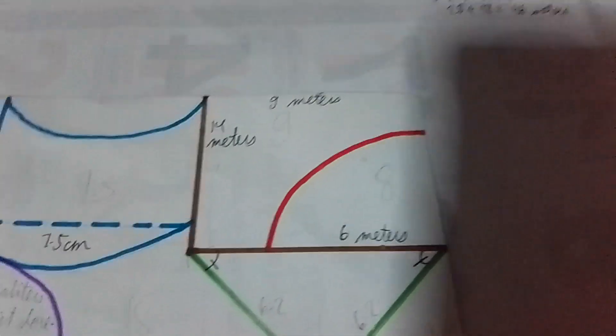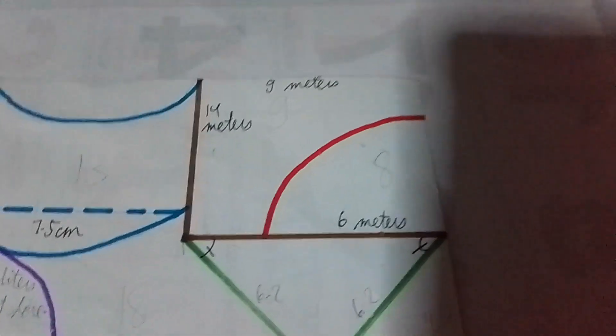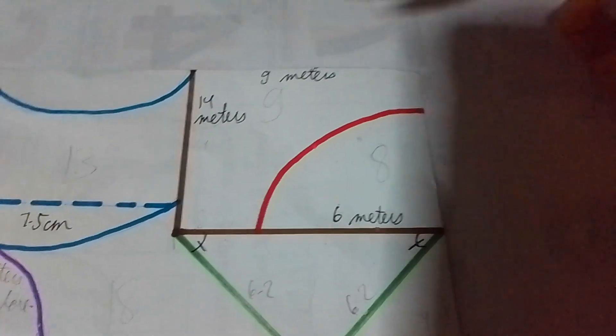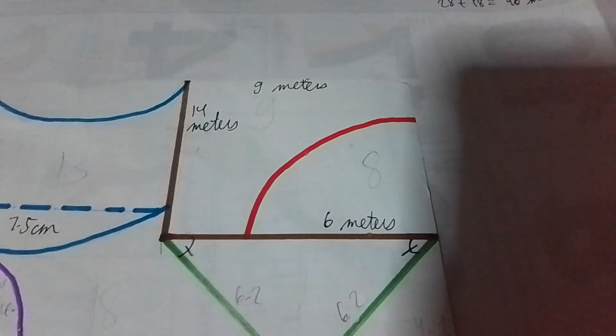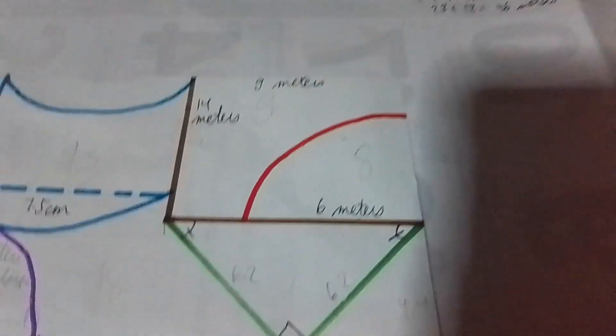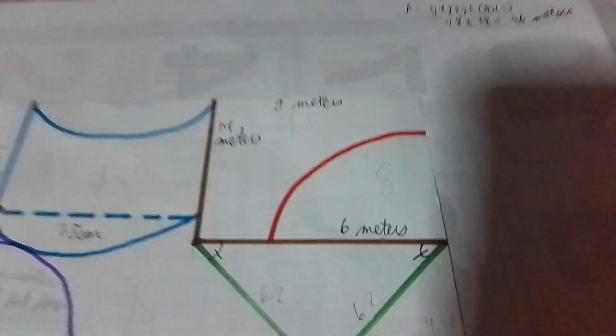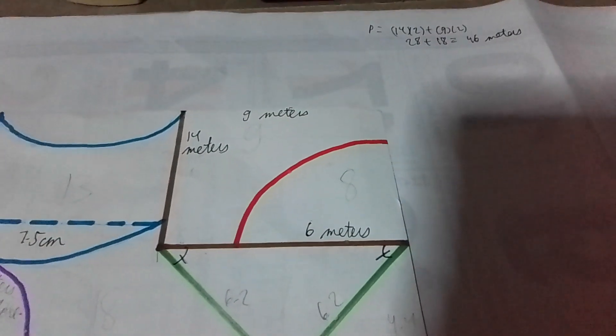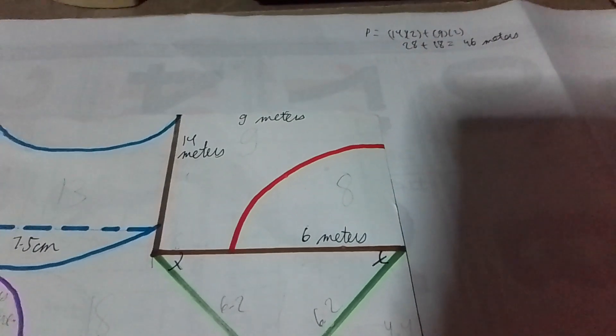Now, here's the catch. There's a semicircle inside. So if you're asked to solve for the perimeter that includes the semicircle, first let's solve for the perimeter of the semicircle.